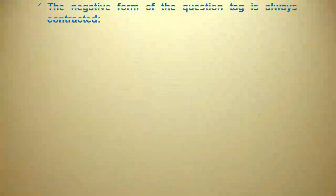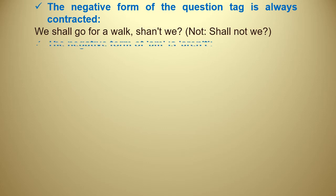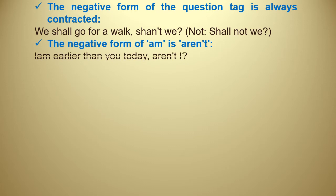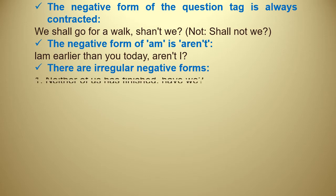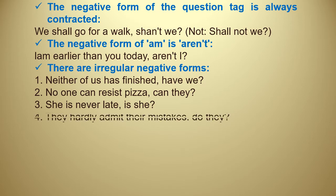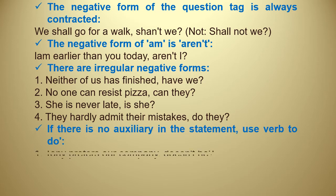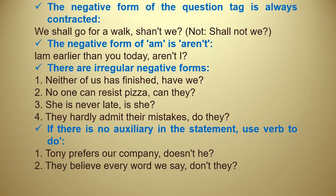The negative form of the question tag is always contracted. For example: 'We shall go for a walk, shan't we?' Note it is wrong to write 'shall not' in full — it must be contracted. The negative form of 'am' is 'aren't': 'I am earlier than you today, aren't I?' There are also irregular negative forms in question tags.